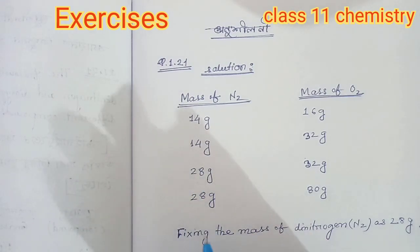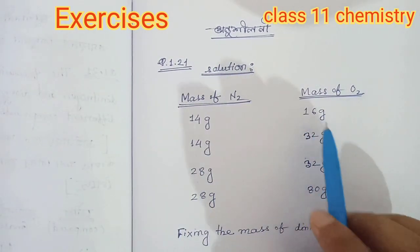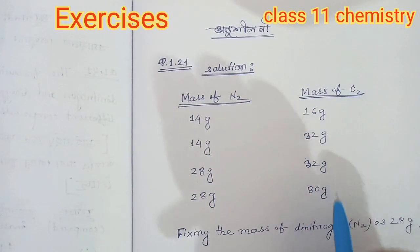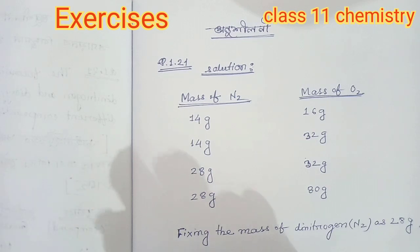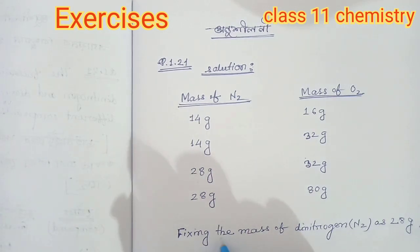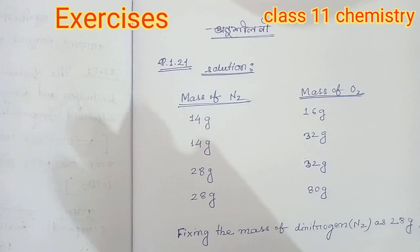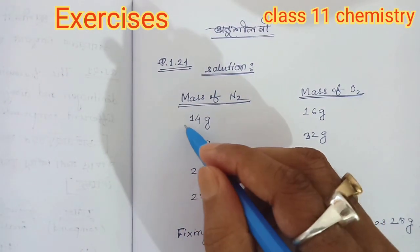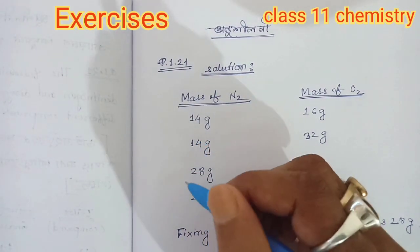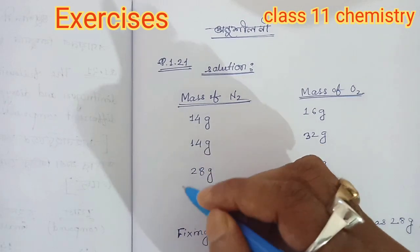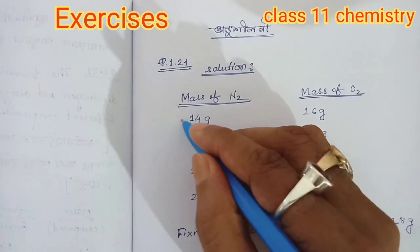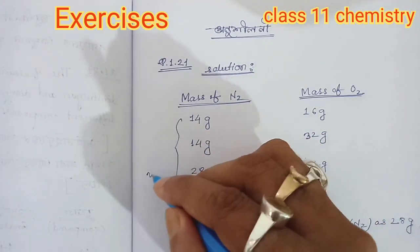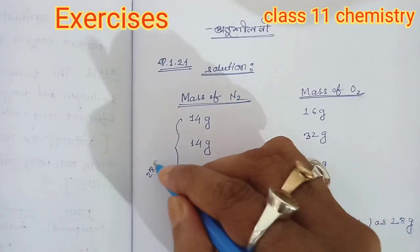The mass of oxygen is 32 grams. Fixing the mass of dinitrogen at 28 grams, I will fix the mass — 28 grams.